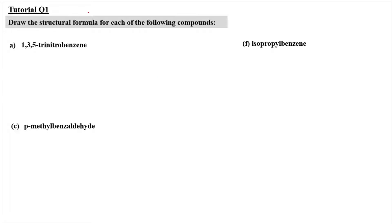For tutorial question 1, we have to draw the structural formula for each of the following compounds. For part A, we have 1,3,5-trinitrobenzene. To draw the structural formula, first we need to know our parent chain — the parent is benzene. We draw a benzene ring, either as a circle or using carbon-carbon double bonds. At carbon number 1, it is going to be attached with a nitro group, NO2.